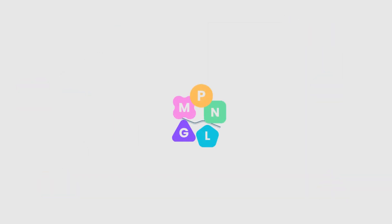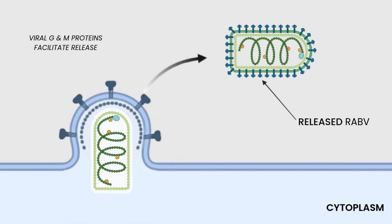Once all the components are ready, RABV is assembled. The M and G proteins facilitate escape from the host cell, and the virus takes a portion of the host membrane as a souvenir to form its new envelope.